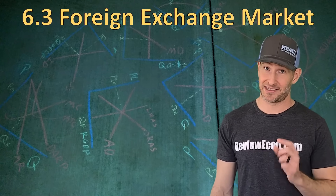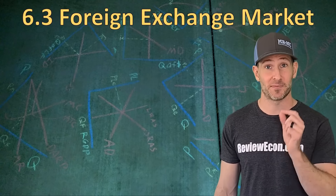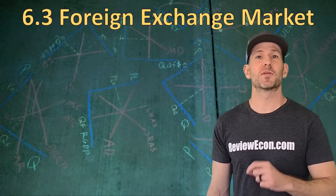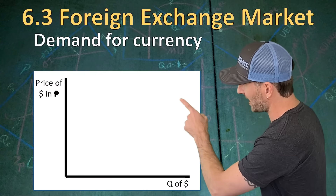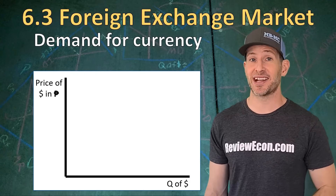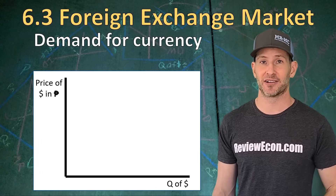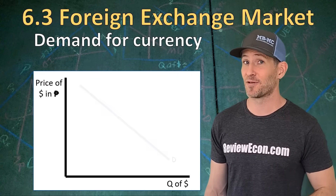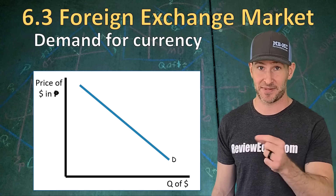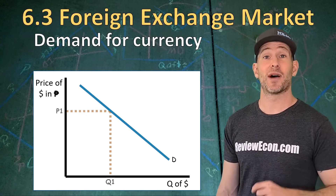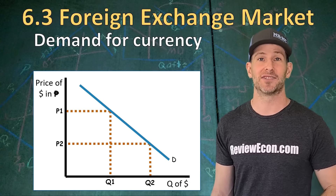The next thing we're going to look at is foreign exchange markets. Since the price of most things is determined by supply and demand, it's not going to be any different for the prices of currencies, which we call the exchange rate. First, we're going to look at the demand for U.S. dollars in the international foreign exchange markets. Here we have the price of dollars in pesos — that's the exchange rate on the y-axis. On the x-axis we have the quantity of U.S. dollars. Just like most other demand curves, we have a downward sloping demand curve because there's an inverse relationship between the exchange rate and the quantity of U.S. dollars demanded. At high exchange rates, we have a low quantity of dollars demanded, and at low exchange rates, we have a high quantity of dollars demanded.